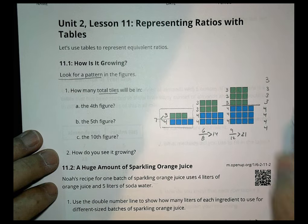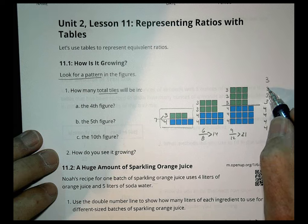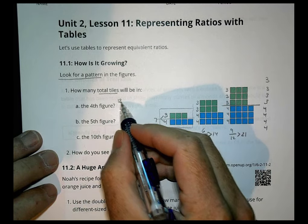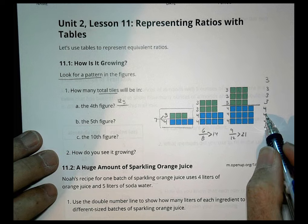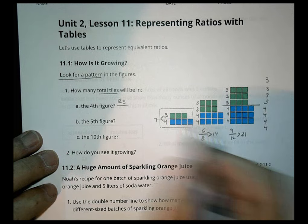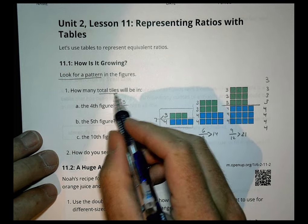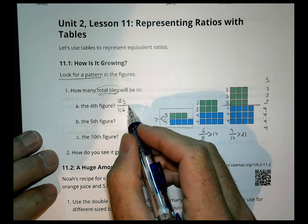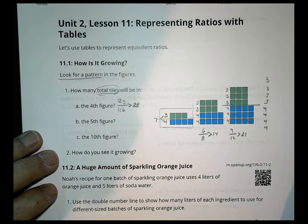In the fourth figure, we would have three, six, nine, twelve — so twelve green — and four, eight, twelve, sixteen blue. So in terms of total tiles, we'd have twelve plus sixteen, which becomes twenty-eight total tiles.